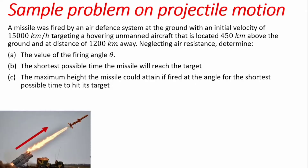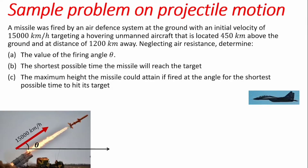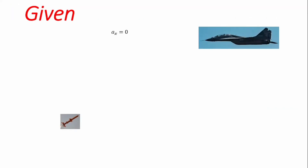To solve this problem, let's first describe what we have. The missile is fired at a velocity of 15,000 kilometers per hour at an angle theta, targeting an aircraft that is 450 kilometers from the ground and 1,200 kilometers away.